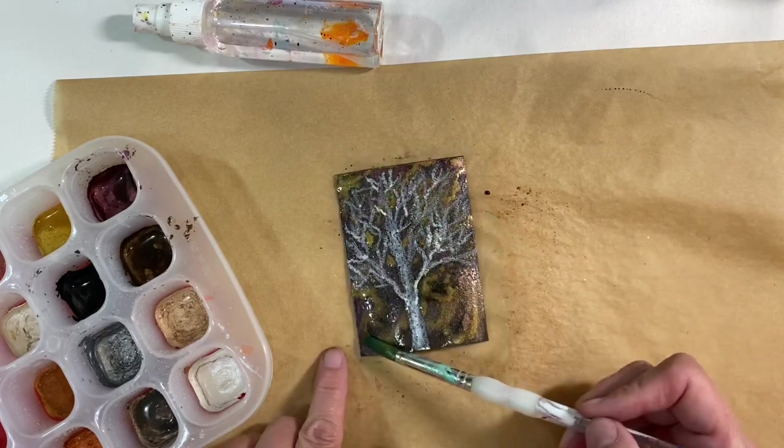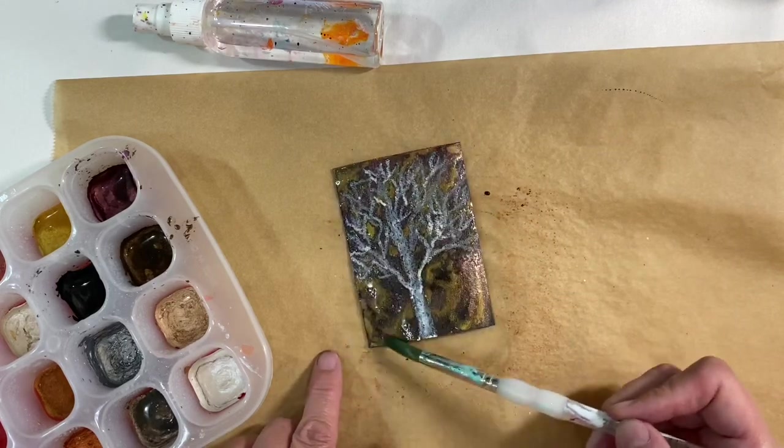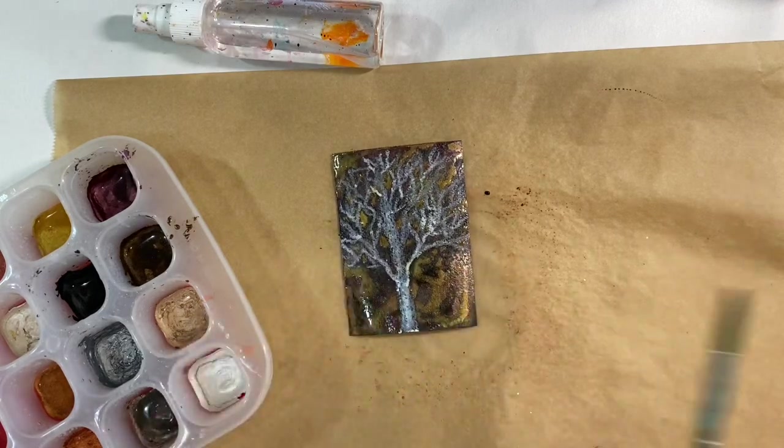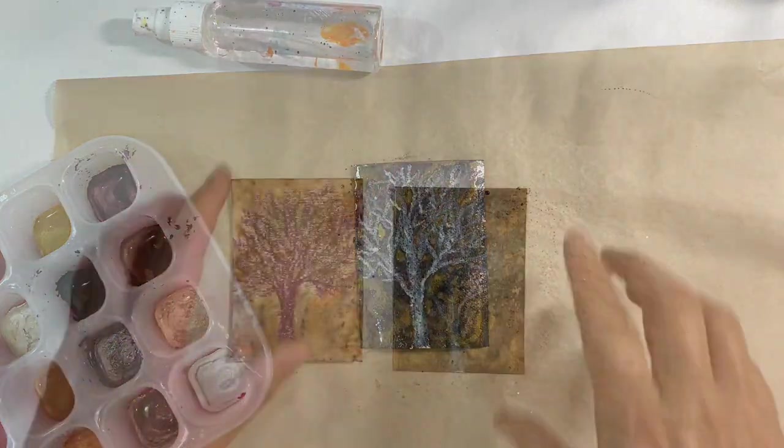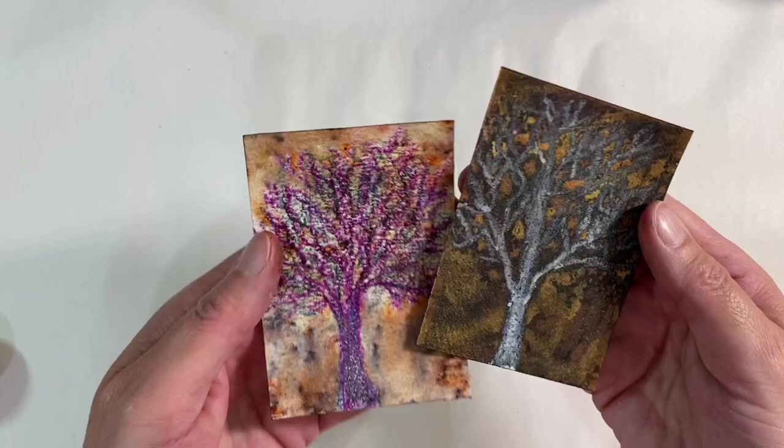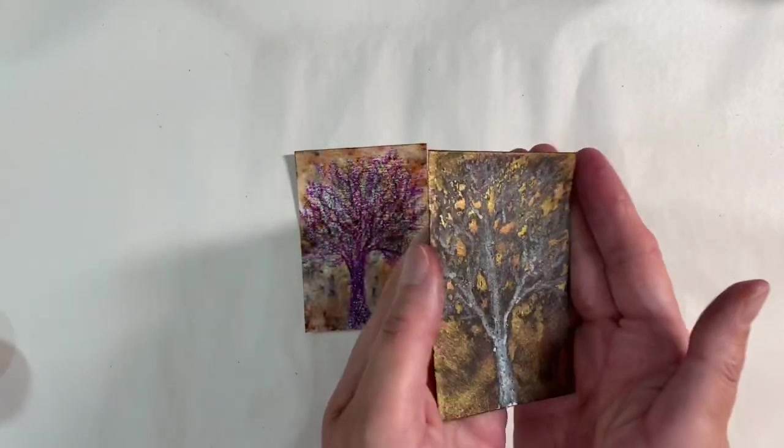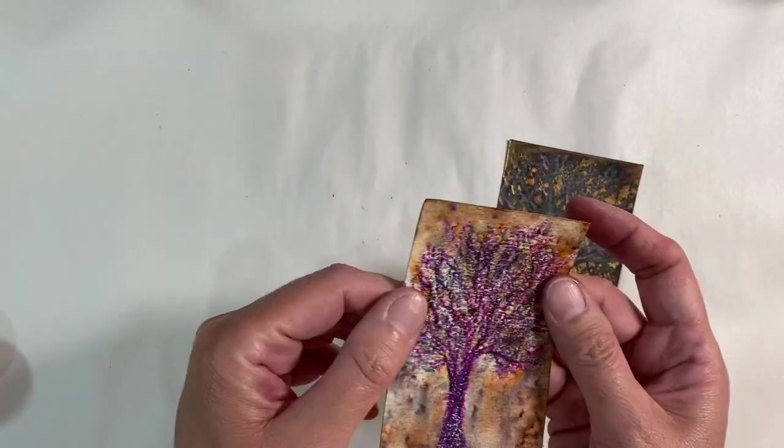So look what you can do with just a simple bog standard kids wax crayon. Here are my two finished wax crayon resist pieces. I just love that. That was so simple, quick and easy to do, really effective.